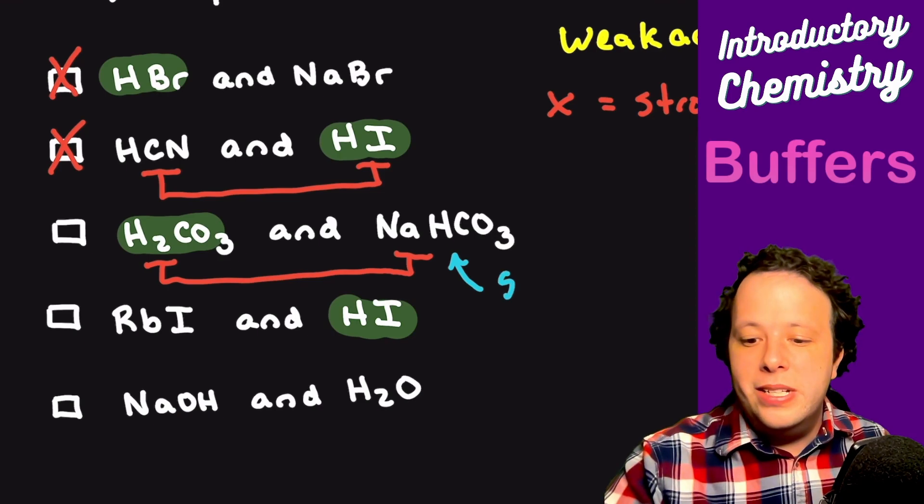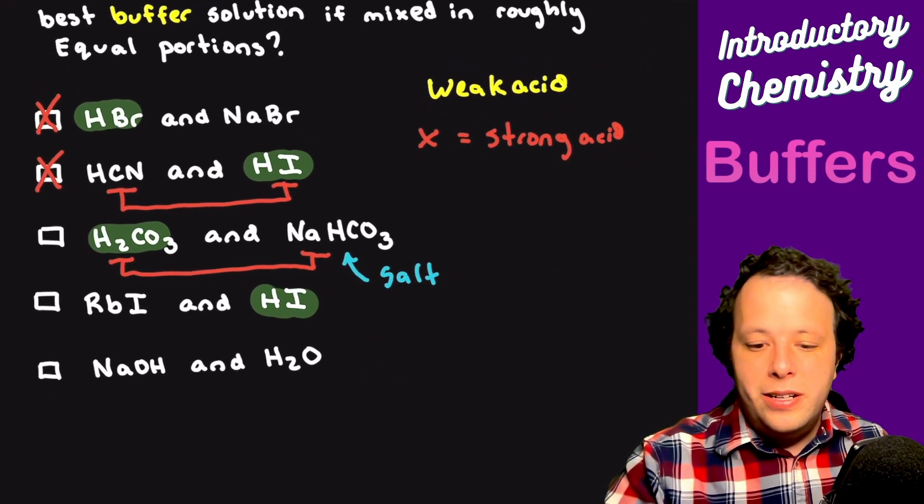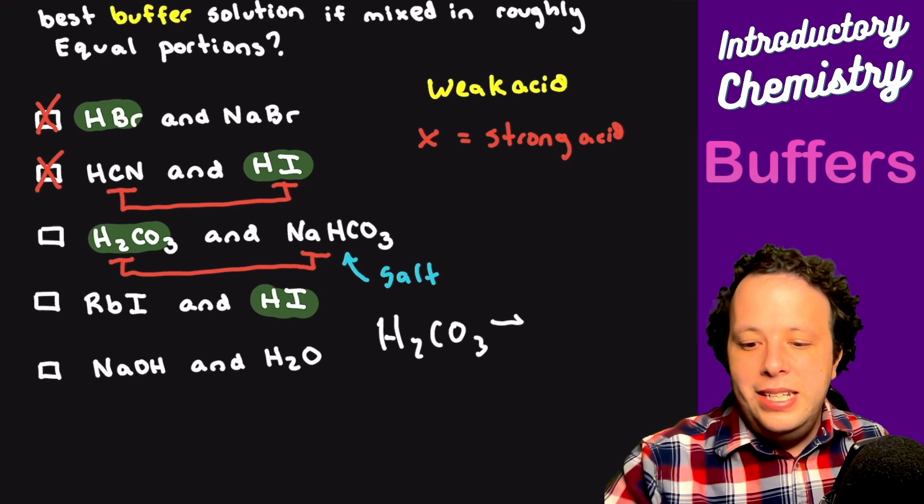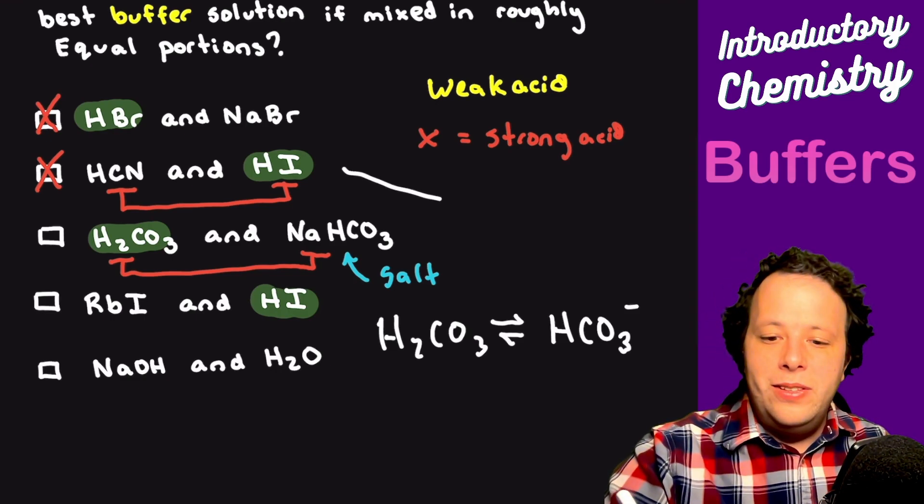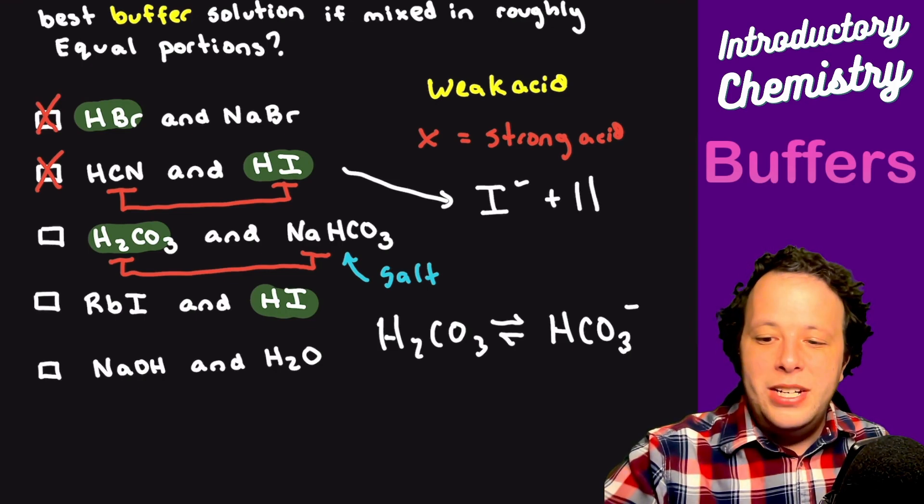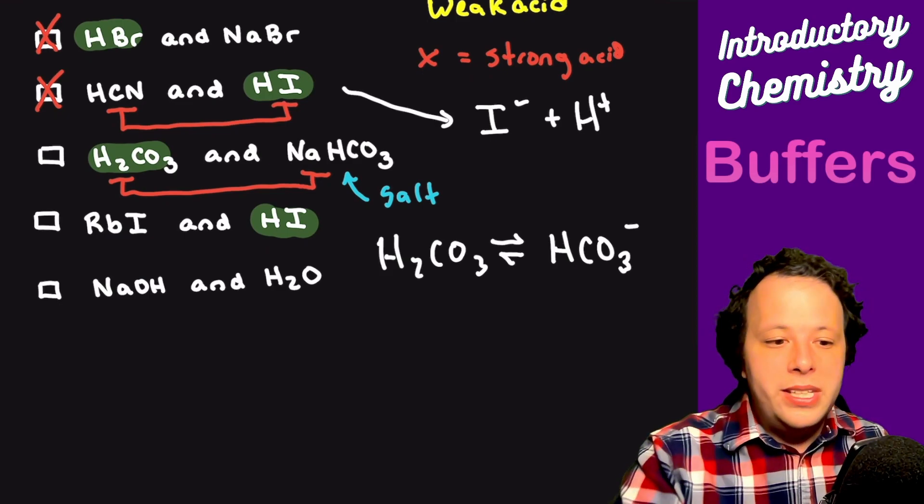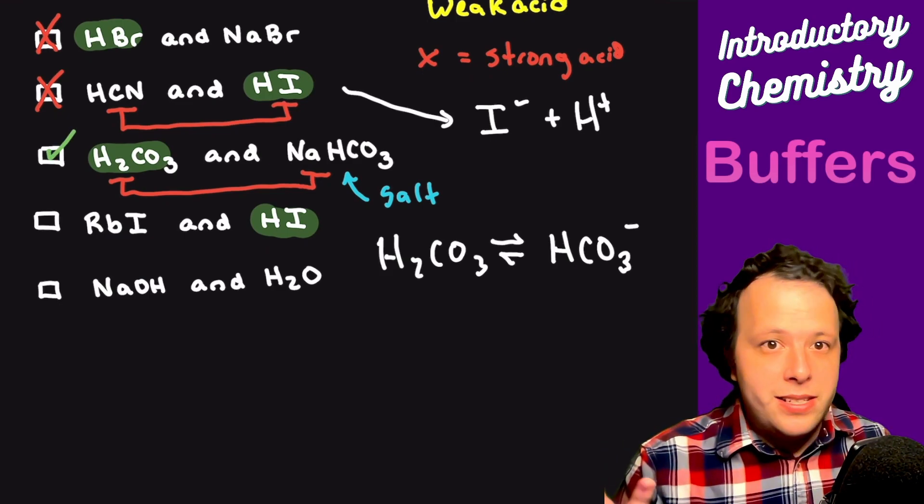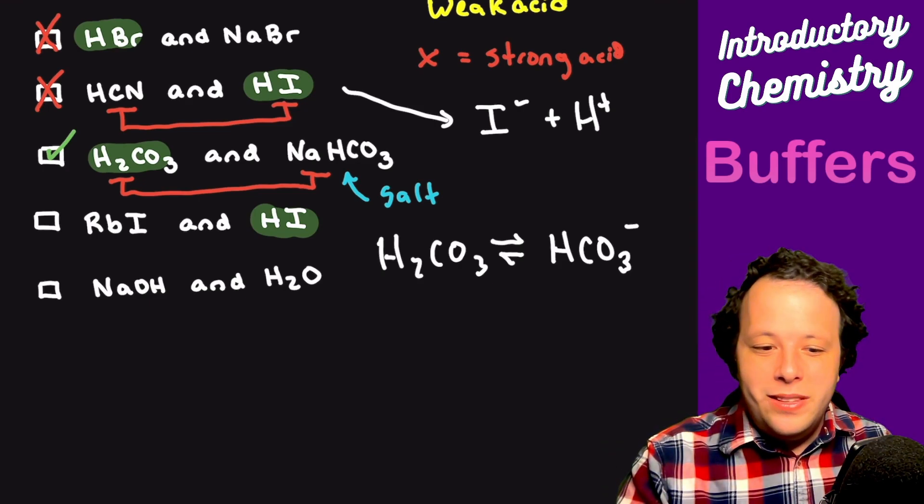The essential part of H2CO3 is that it needs to be able to dissociate to make HCO3-. Looking at the other ones, HI makes I- and H+. That doesn't match either. So that could be a really good candidate. Let's put a little green check mark. Now is it the best? I don't know yet.